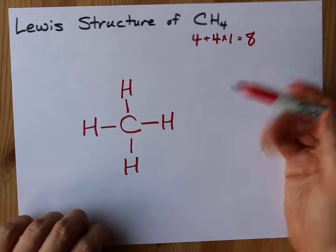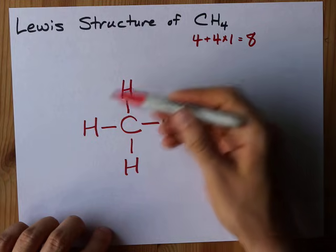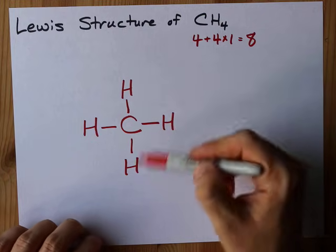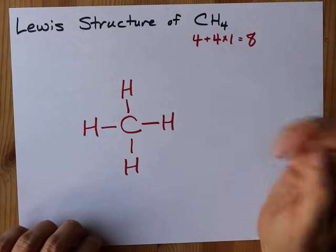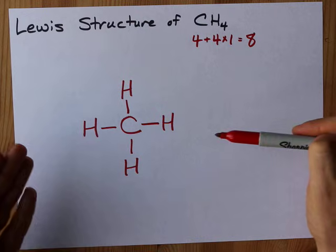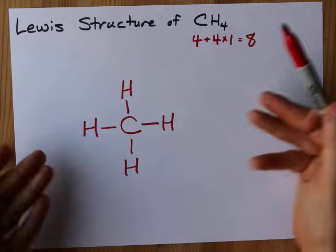This carbon has a full octet because it has two, four, six, eight electrons around it. And each hydrogen is happy with just two electrons around each one. It's an exception to the octet rule. There is nothing more special that is happening here. This is the Lewis structure and you're done.